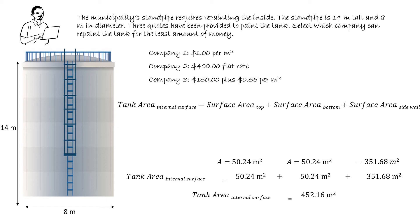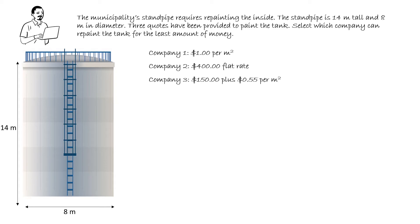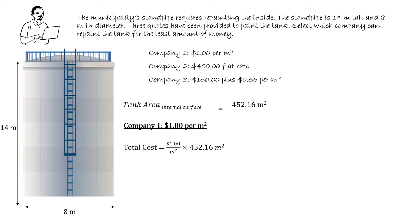Now that we have the tank area, we can calculate the costs. The total area is 452.16 square metres. The total cost for Company 1 is $1 per square metre multiplied by 452.16 square metres. The units of area — metres squared — will cancel, leaving us with dollars. The total cost to paint the tank charged by Company 1 is $452.16.